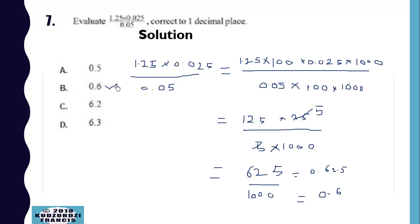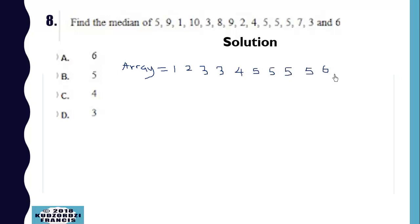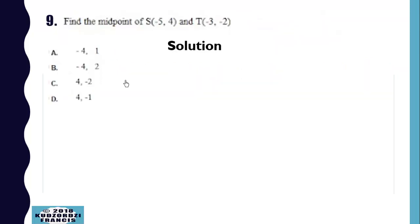Click the link below for more or to get the rest of the solution. Now we are finding the median. We find the array by arranging all values in ascending order, giving: 1, 2, 3, 3, 4, 5, 5, 5, 6, 7, 8, 9, 9, 10. We have 15 values, so the middle is the 7th one, which is 5.